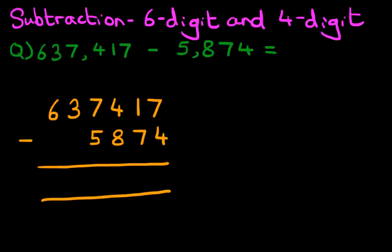Let's label the columns as well. We've got units, tens, hundreds, thousands, ten thousands, and hundred thousands. We have now done stage one, which is rewriting the question from the horizontal format into the vertical format. We are now ready to do the calculation.